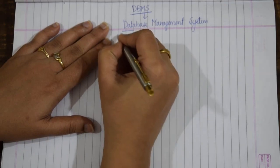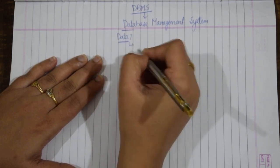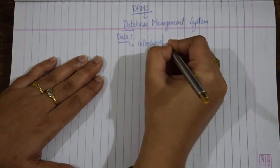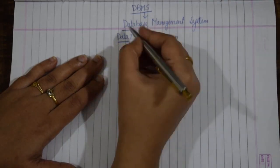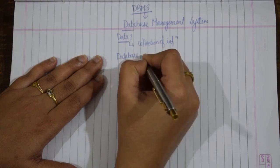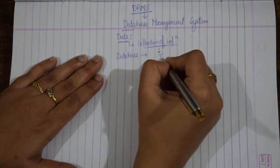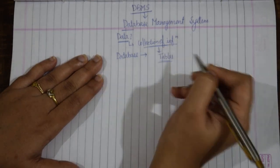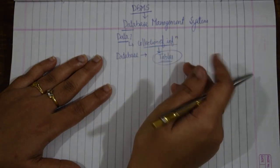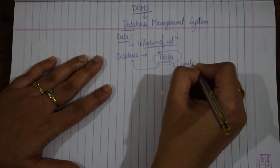Starting with a very basic question: what is data? Data is any information, or a collection of information is called data. A collection of this information in the form of tables is called a database. So a collection of tables is called a database.